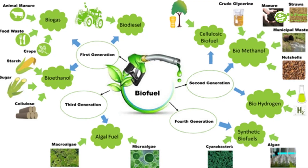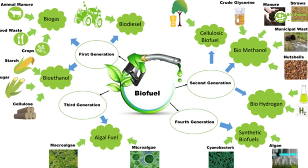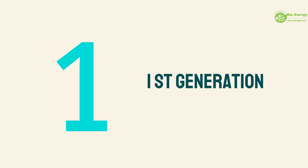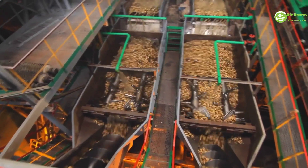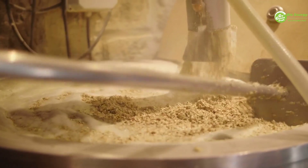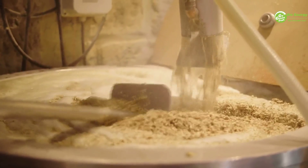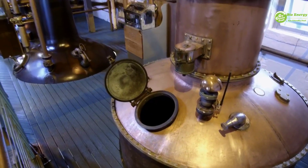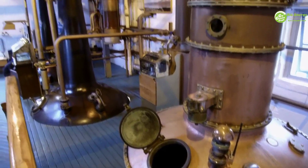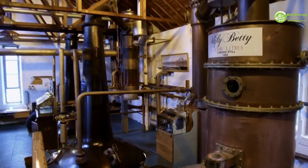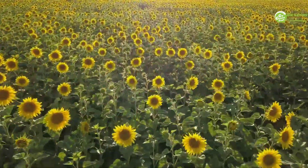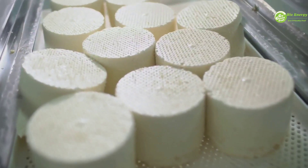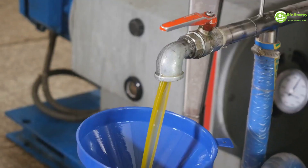Classifications of biofuels by generation: First generation biofuels involve sugars and starches fermented to produce ethanol, made from sugar, starch, or vegetable oil, using technologies and processes like fermentation and distillation. Biodiesel is produced from plant oil or animal fat through a process called transesterification.